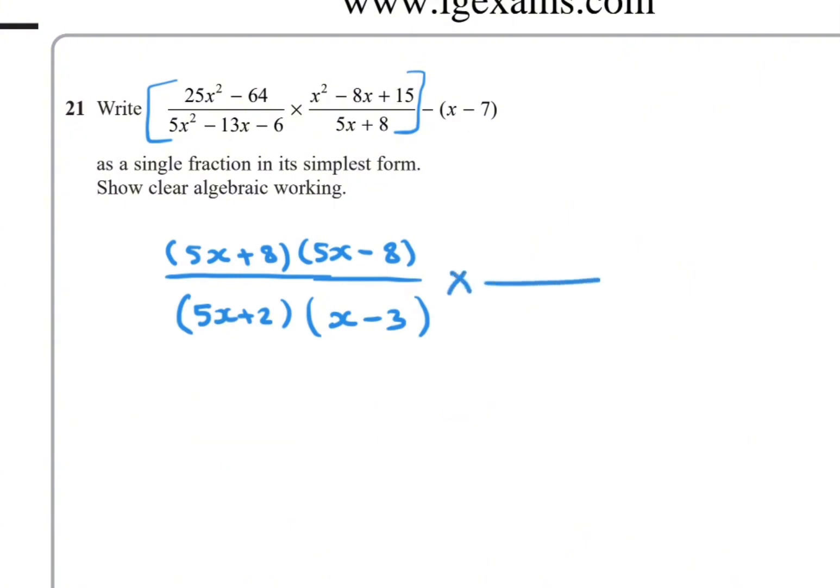Now for the second fraction: x² - 8x + 15. No common factor, trinomial, so two brackets. x² means x times x. This you can solve without calculator. Two numbers: if you multiply you get 15, and if you add you get -8, so -3 and -5. For 5x + 8, we cannot factorize more.